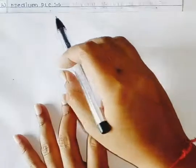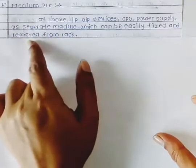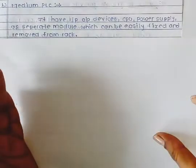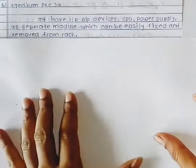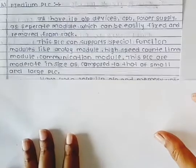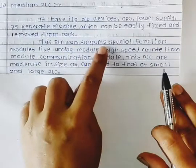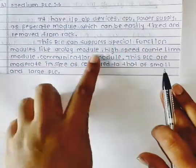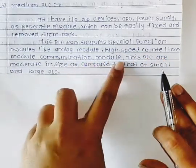Next is the medium PLC. It has input-output devices, CPU, and power supply as separate modules, which can be easily fixed and removed from the rack. This PLC can support special function modules like analog modules, high-speed counter-timer modules, and communication modules.